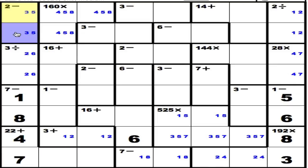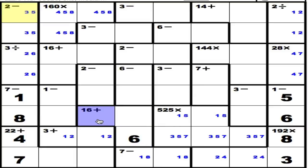We've got 3 and 5 here, 4, 5, and 8. Let's take a look down here. 16 in this corner — we have already got 6 of it accounted for, leaving 10. 10 can only be accomplished three ways: 6 plus 4, 7 plus 3, or 8 plus 2. Because we already have a 6 and an 8 in that row, this must be 7 and 3. We don't know what order yet.